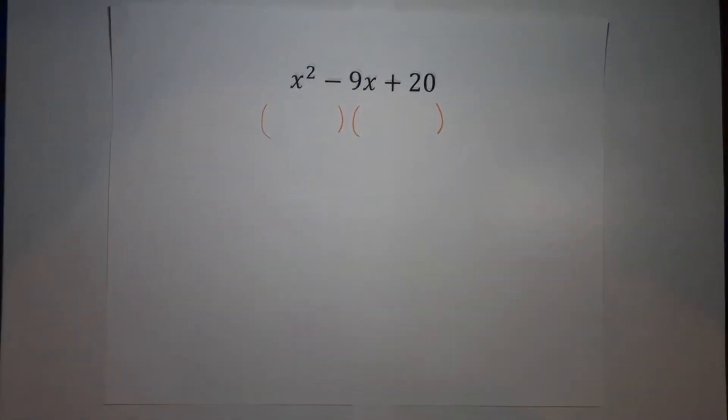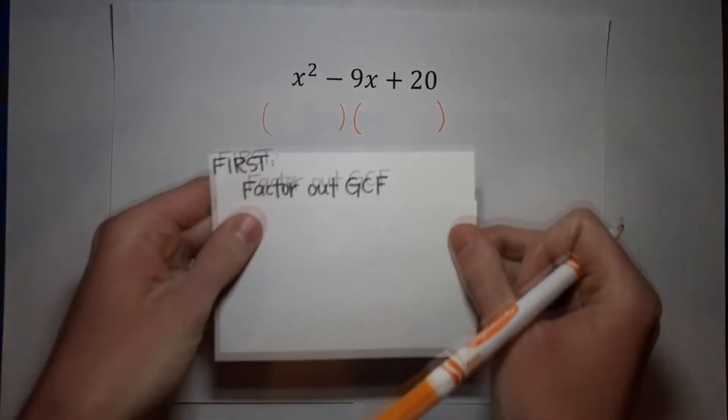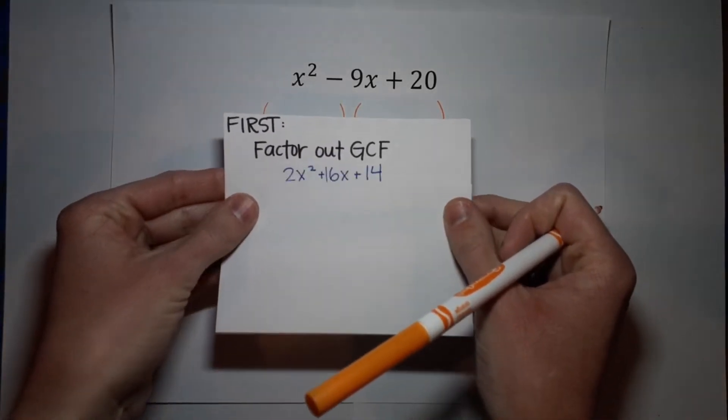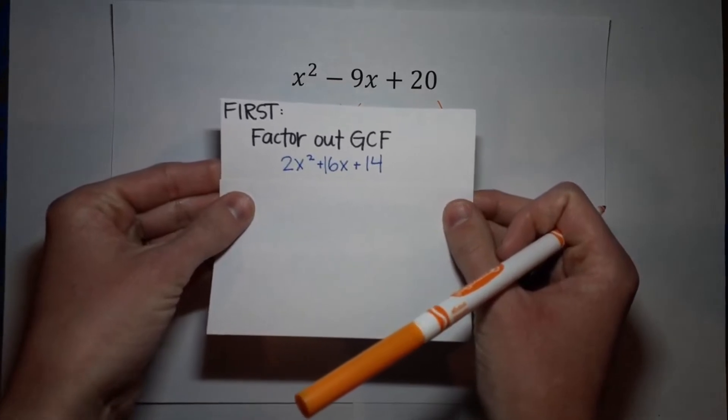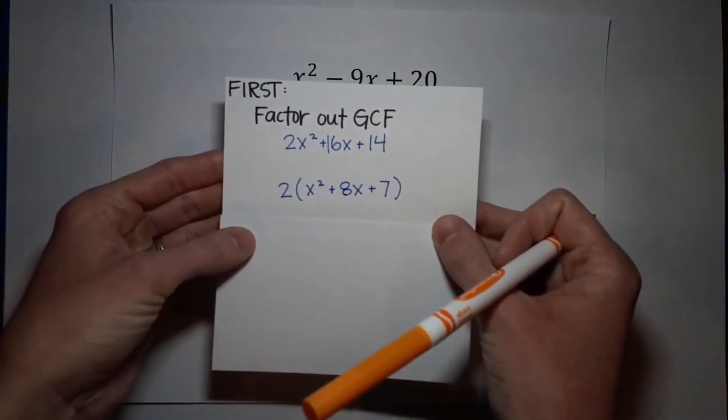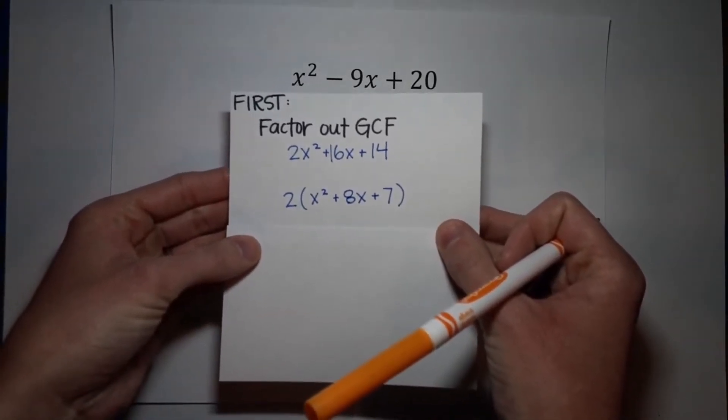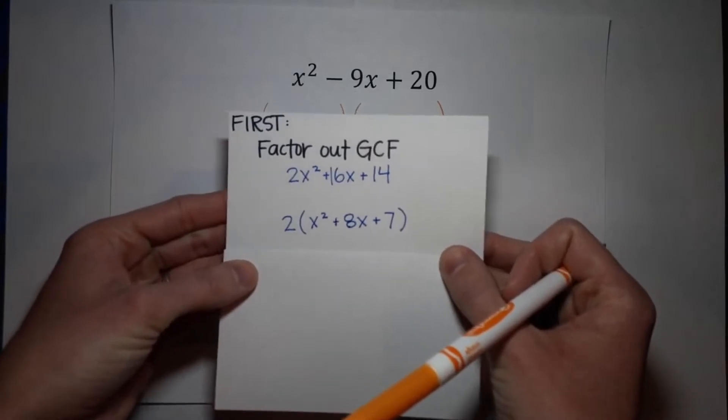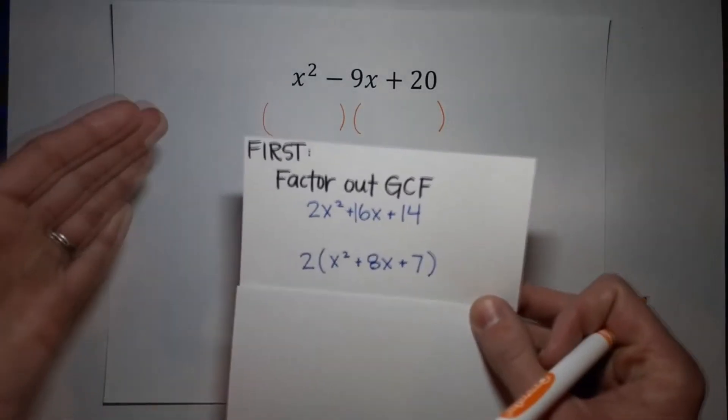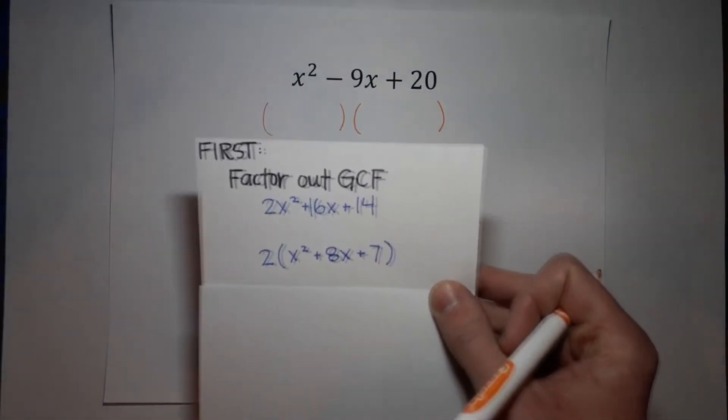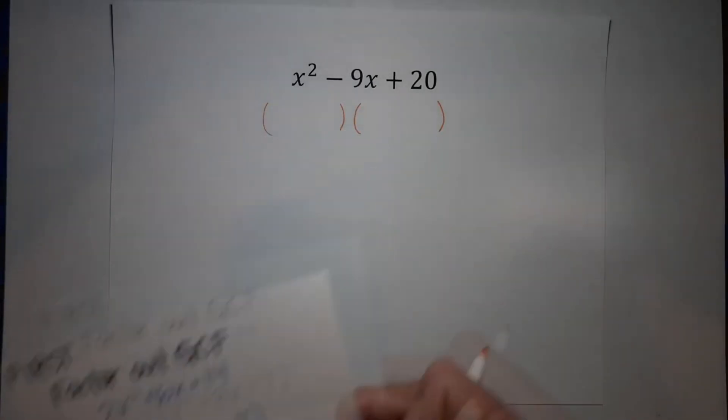The very first thing you need to do is always get in the habit of factoring out a GCF. What is that greatest common factor? So that just means if you look at this, I notice they're all even so I can pull out a two. You always want to pull out anything first that can be pulled out because it makes it much easier to factor.